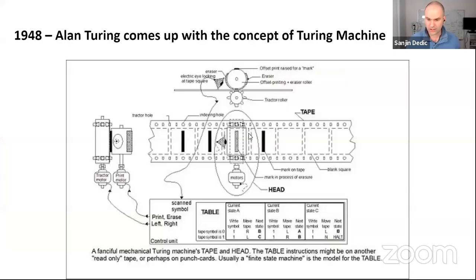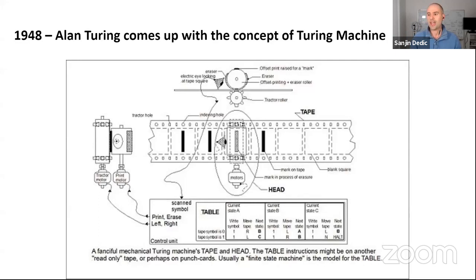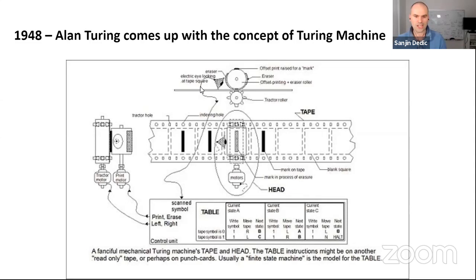Every time you press a key on your keyboard, a sequence of ones and zeros eight digits long goes inside and gets processed. Every time you look at an image on your screen, there are about 2 million pixels, each of which has a 64-bit or 32-bit sequence of ones and zeros specifying the pixel colors — red, green, and blue — and pixel locations. All your computer really does is take in information as ones and zeros, manipulate it using programs written in ones and zeros, and put out information in ones and zeros.